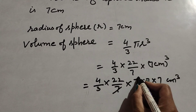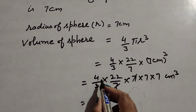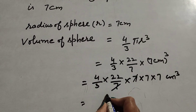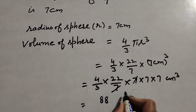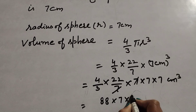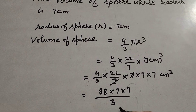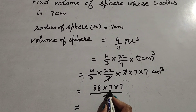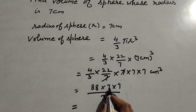The 7 in the denominator and 7 in the numerator cancel out. So 4 multiplied by 22 gives 88. Then 88 multiplied by 7 multiplied by 7 over 3. So 88 times 7 gives 616.